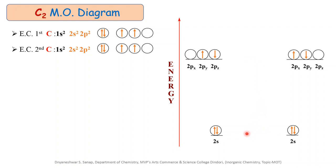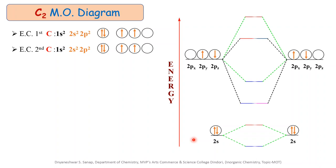When these 8 atomic orbitals from both carbon atoms combine together, according to the linear combination of atomic orbitals (LCAO) principle, they produce 8 molecular orbitals. Out of these 8 molecular orbitals, 4 are bonding in nature and 4 are anti-bonding in nature.